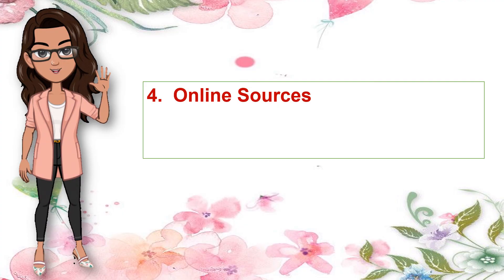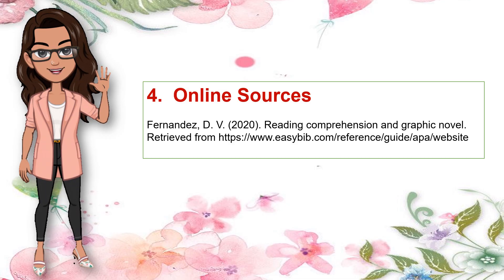For online sources — articles from credible websites — example: Fernandez, D.B. (2020). Reading Comprehension and Graphic Novel. Retrieved from [link]. Notice that the last part of the entry includes the link where the article was retrieved. Remember not to put a period at the end of the entry. When you make a reference list, it should be arranged in alphabetical order using the first letter of the surname.